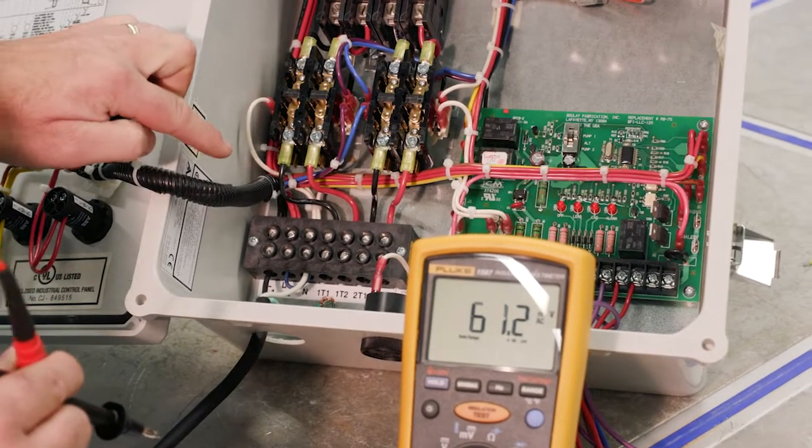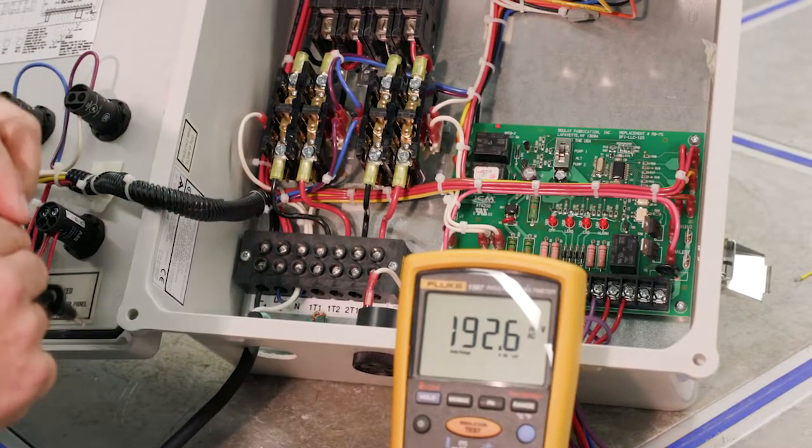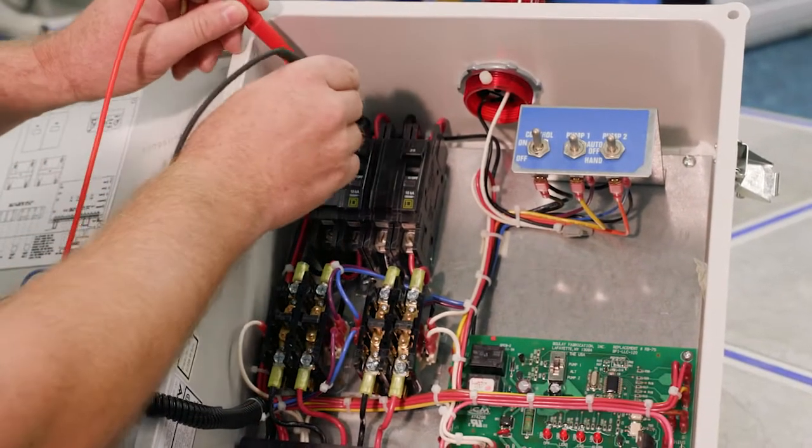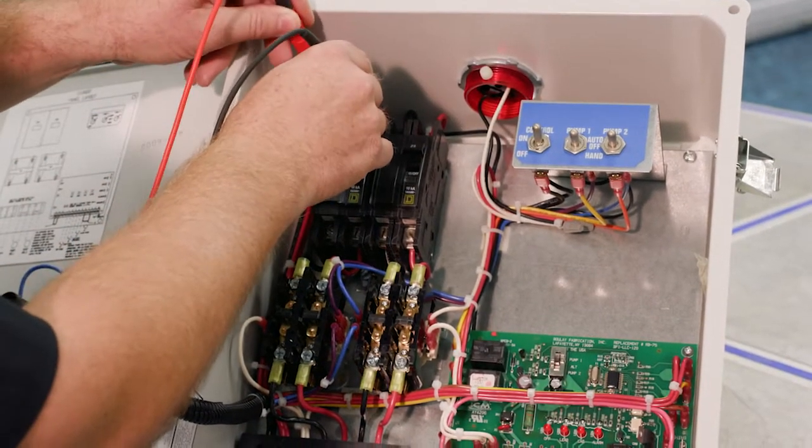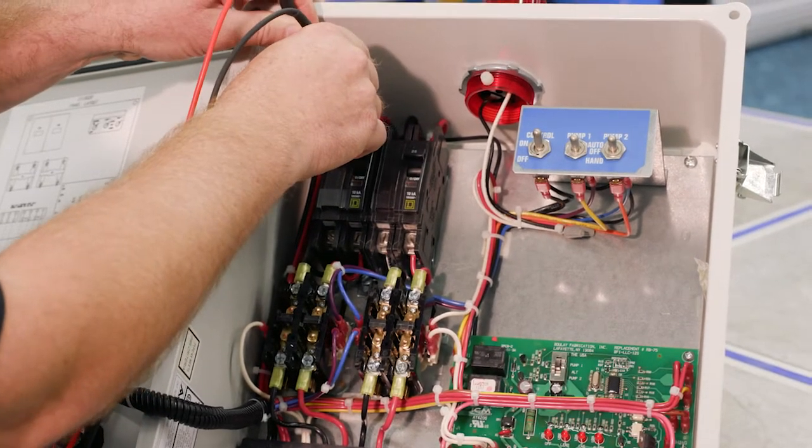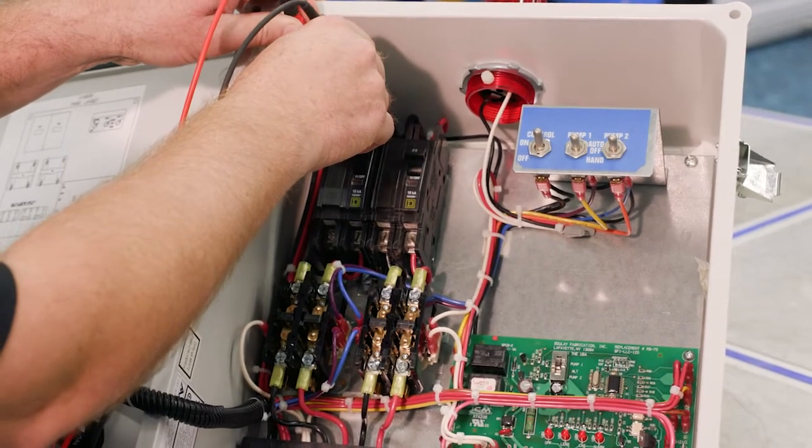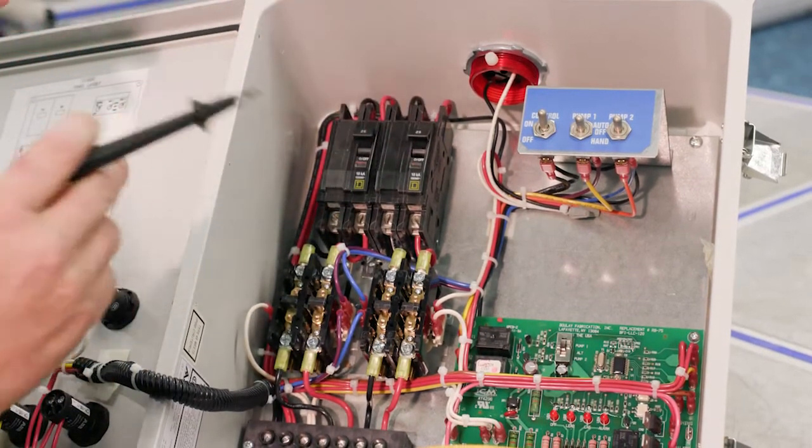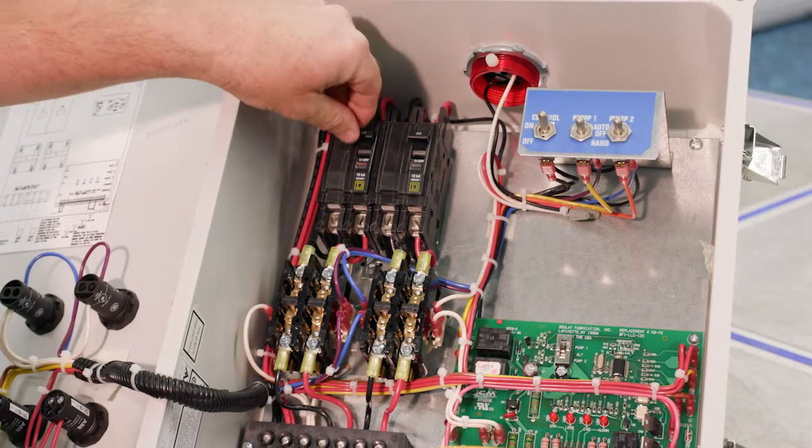So next we're just going to follow that power up. We can see that it goes on the top side of the circuit breaker. So we're just going to follow that panel. So again, we have 124 volts going up to the top of the circuit breaker. So circuit breakers, we'll leave these on.